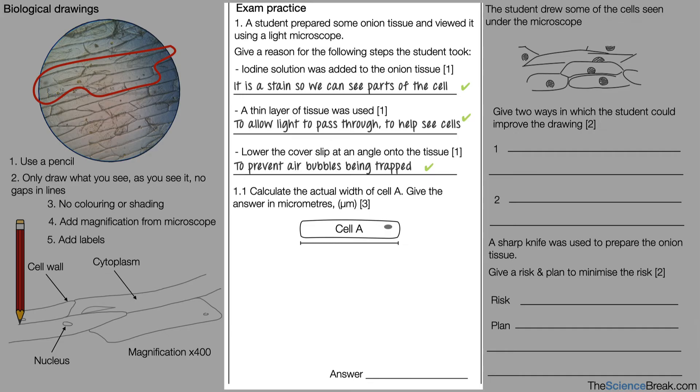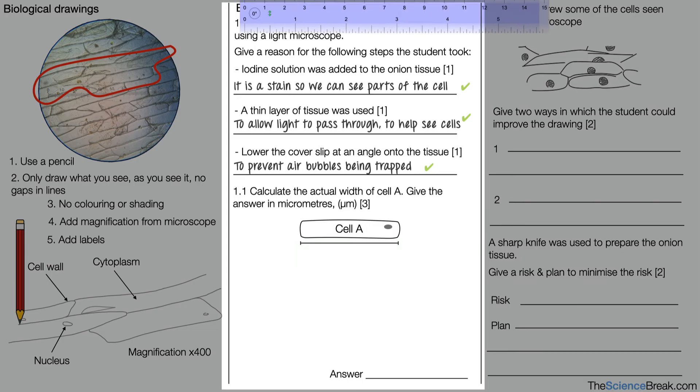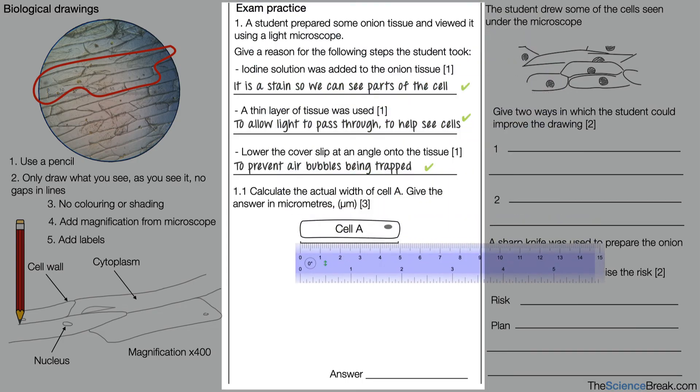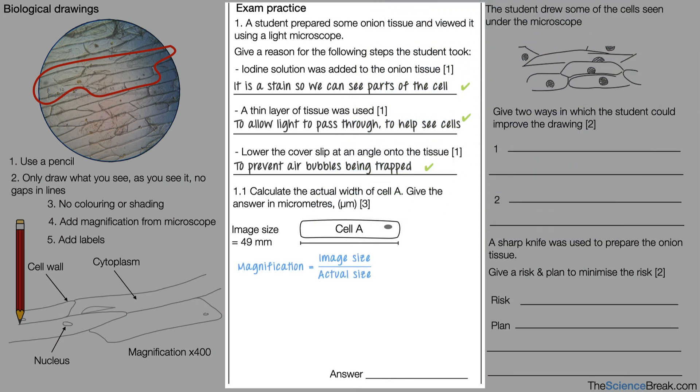Next question. Calculate the actual width of cell A. Give the answer in micrometers. So this is actually a bit of a recap of our cells unit for microbiology. The first thing we would need to do is to measure the width of the cell and they have kindly given us a guideline to help us. We have the width of the image of cell A there and that image size is 49 millimeters. We would then use our equation magnification equals image size over actual size. And if you don't feel confident rearranging the equation, you could use the formula triangle here. We would times by 1000 to convert our millimeters into micrometers. So 49 millimeters is equal to 49,000 micrometers.